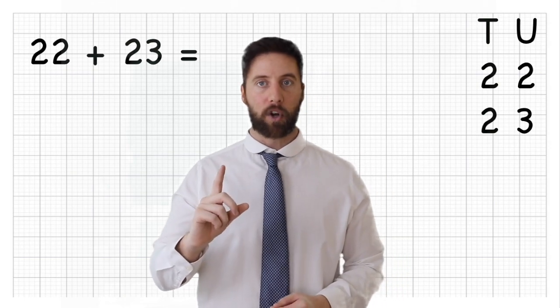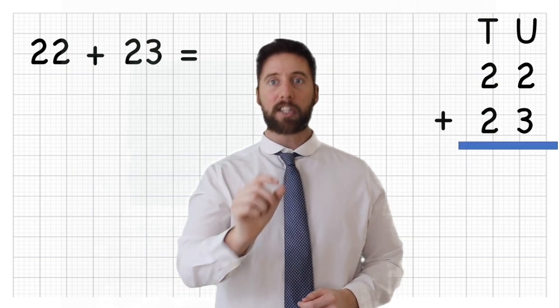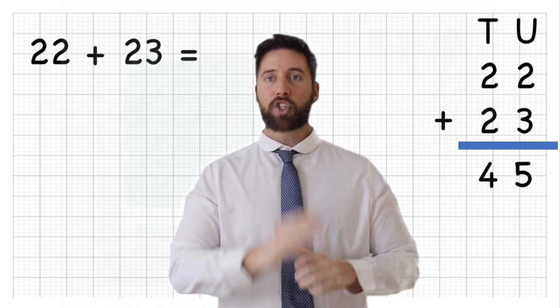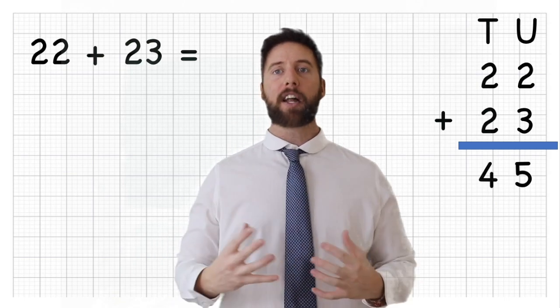Remember, we always start at our smallest value. So in this case, it's my units. Two, add three. It gives me a five. Move along into my tens. Two, add two. Gives me four. Gives me a grand total of 45.